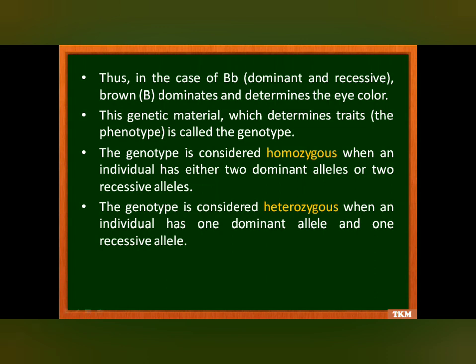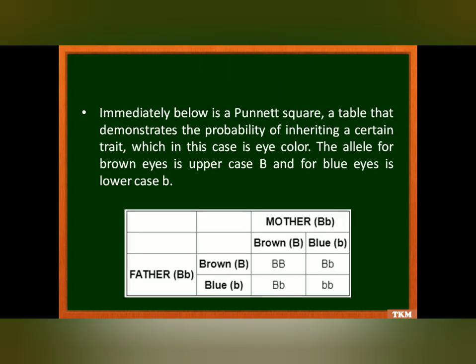The genotype is considered homozygous when an individual has either two dominant alleles or two recessive alleles. The genotype is considered heterozygous when an individual has one dominant and one recessive allele. Using a Punnett square to demonstrate the probability of inheriting eye color: if both mother and father each have one dominant and one recessive allele, out of four children, three will have brown eyes — one with two dominant alleles, two with one dominant and one recessive — and one child with two recessive alleles will have blue eyes.